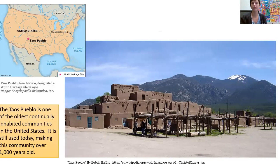On the map, you can see there's a star — that's where the Taos Pueblo is. The Taos Pueblo is one of the oldest continually inhabited communities in the United States. It is still used today, making this community over 1,000 years old.